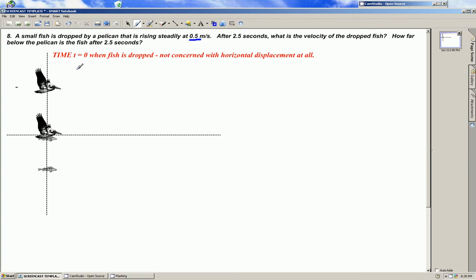We know the velocity of the pelican is equal to the velocity of the fish which is equal to 0.5 meters per second. That's a positive velocity. It's moving upward. I should put down this is the fish here so we won't confuse that with the final velocity.